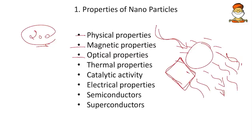Thermal properties: nanoparticles have very high thermal properties, meaning they can withhold heat, and that is why they are used as heat sinks. For example, a nanoparticle heat sink in a building would act as fireproof material. Then catalytic activity: nanoparticles have so much surface area exposed that chemical reactions are 100 times more effective, so they can also act as catalysts.